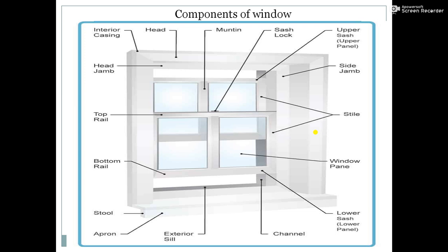These are the components of windows. The components include: head jamb, top rail, bottom rail, stool, apron, exterior sill, the channel in which the window is fixed, lower sash panel, window panel, stile (the vertical member of the window), side jamb in which the window is fixed, upper sash, sash lock which locks the window panels, and head. The important components are the top jamb, side jamb, stile which is the vertical member, and the panel of the window.